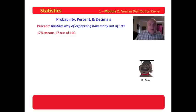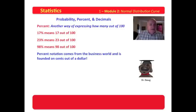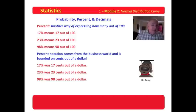17% means seventeen out of 100. 23%, and you notice the percent sign, means 23 out of 100. 98% means 98 out of 100. Percent notation comes from the business world and is founded on cents out of a dollar. If you'll recall a minute ago, we were talking about eighteen out of 100. Here we're talking about seventeen out of 100. Seventeen out of 100 is also written as 17%. So we're beginning to tie these together. 17% was seventeen cents out of a dollar. 23% was 23 cents out of a dollar. 98% was 98 cents out of a dollar.